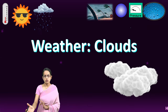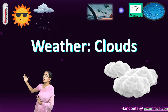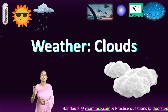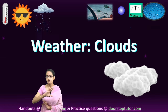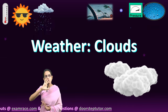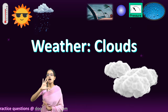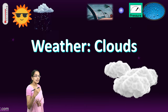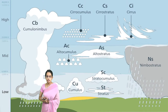Sometimes if a cloud is blocking the sunlight, it appears grey; otherwise, clouds appear white and scatter light more easily. Clouds can be classified under various types.